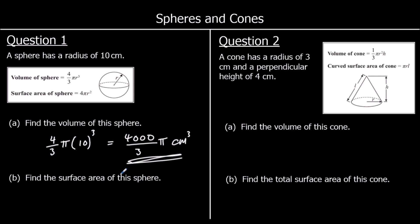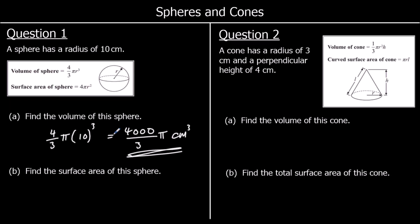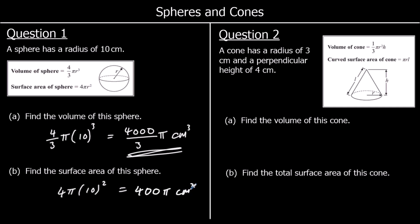Find the surface area of the sphere. The formula is given: 4 pi r squared. So it's 4 pi times 10 squared. 10 squared is 100, times 4 is 400 pi centimeters squared.